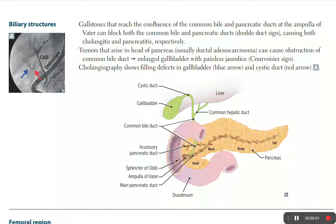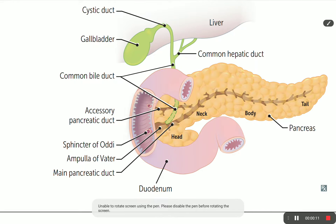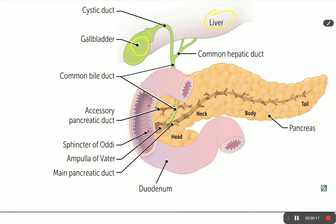Today we're going to talk about the biliary structures. The biliary tree starts from two areas: the gallbladder and the liver. The liver gives us two ducts — right and left hepatic ducts — and the gallbladder gives us a cystic duct.